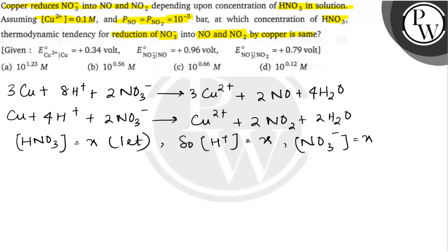Toh, E NO3 minus NO minus EMF for Cu2 plus and Cu will be equal to EMF for NO3 minus and NO2 minus EMF for Cu2 plus and Cu. This will be equal to EMF for NO3 minus and NO2.